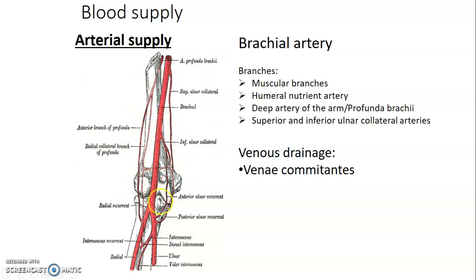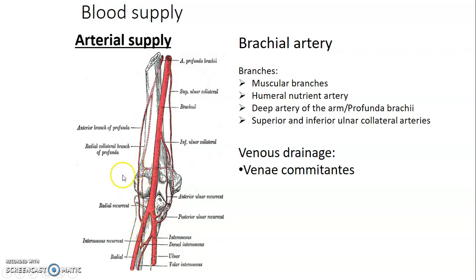That is what forms the elbow anastomosis. Posterior to the medial epicondyle: superior ulnar collateral of brachial and posterior ulnar recurrent of ulnar. Anterior to the medial epicondyle: inferior ulnar collateral of brachial and anterior ulnar recurrent of ulnar. Anterior to the lateral epicondyle: radial collateral of profunda brachial and radial recurrent of radial artery. Posterior to the lateral epicondyle: the middle collateral of profunda brachial anastomoses with the interosseous recurrent from the posterior interosseous, which comes from the common interosseous of ulnar.